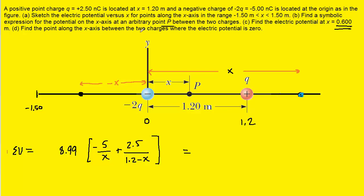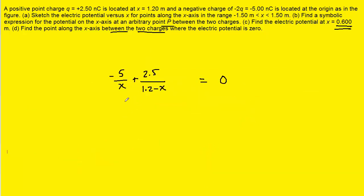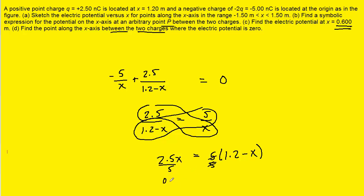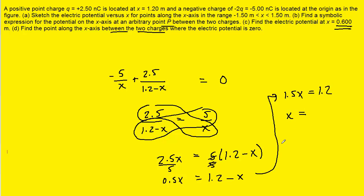For part D, we find the point along the x-axis between the two charges where the electric potential is zero. We set the expression for potential between the charges equal to zero and solve for x. Dividing out 8.99, adding 5 over x to both sides, then cross-multiplying gives 2.5x equals 5 times 1.2 minus x. Dividing both sides by 5 gives 0.5x equals 1.2 minus x, so 1.5x equals 1.2, and x equals exactly 0.8 meters. That is the correct answer to part D.